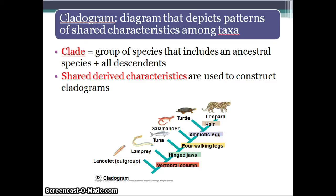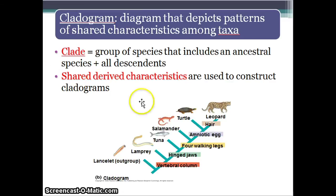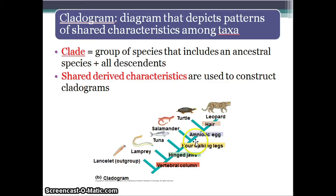A cladogram is usually built using characteristics to categorize organisms. The groups of species share one common ancestor, and everybody in that clade has a very common structure, feature, or characteristic. Everything beyond a given branch point will have similar characteristics. For example, everything beyond this point would have four legs — salamander, turtle, leopard. That's the cladogram.